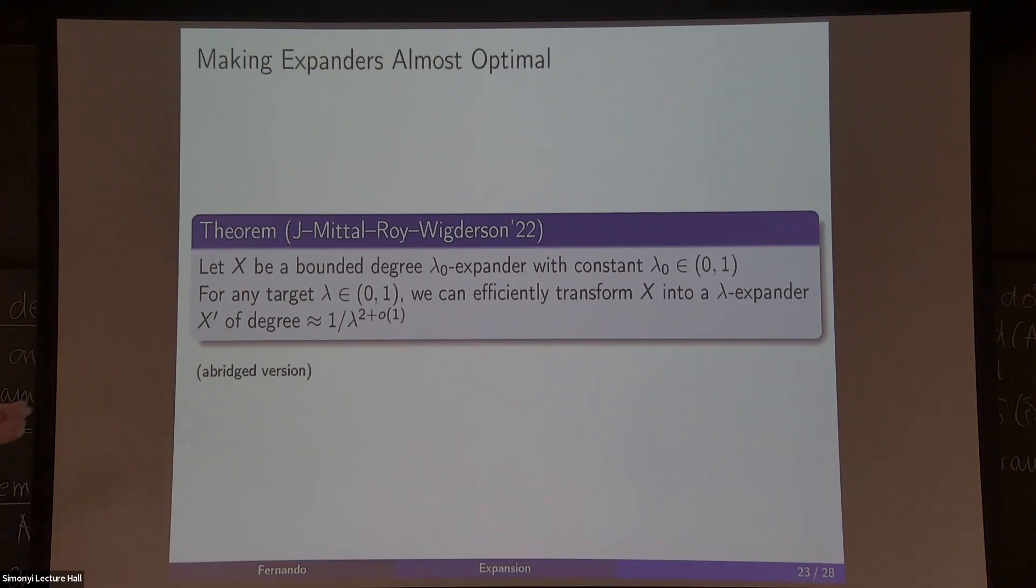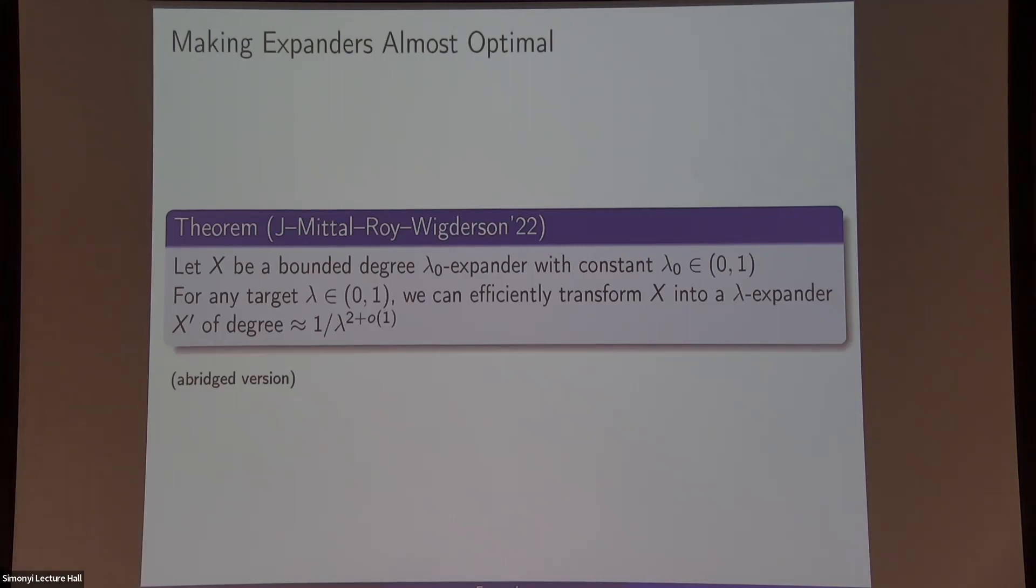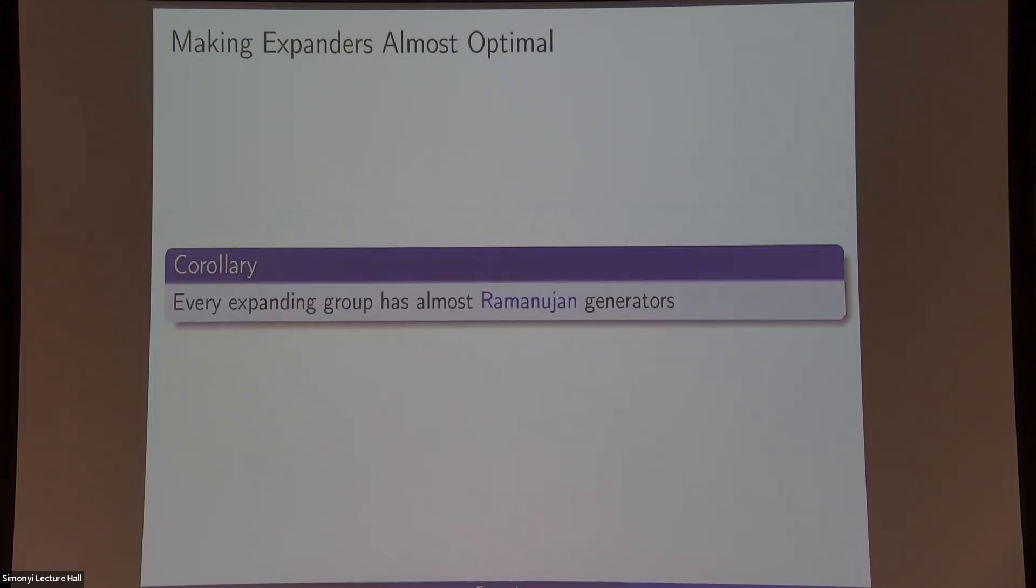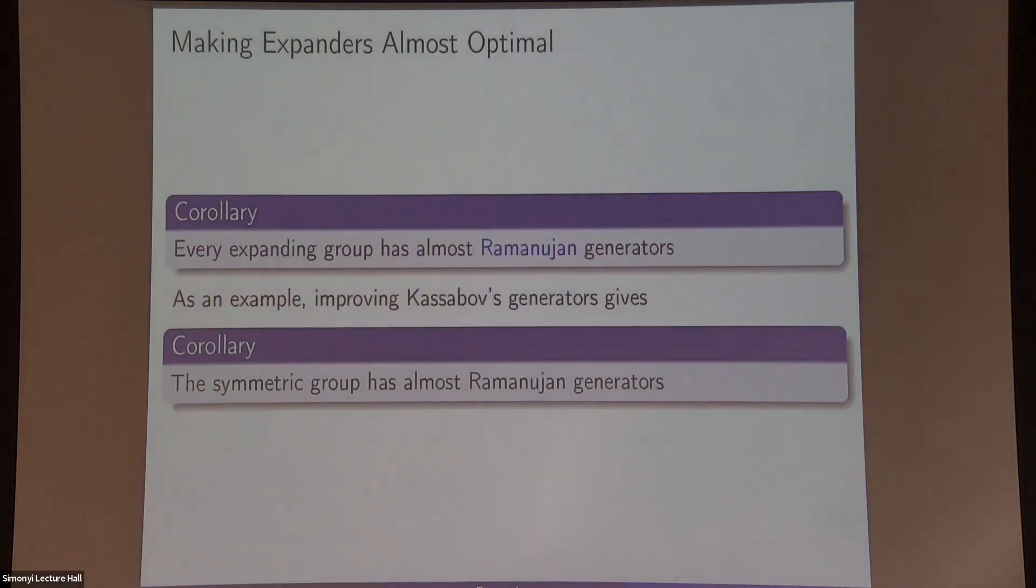That's the theorem that we prove. Besides, because we preserve the structure of the graph, whenever, for instance, if you start with a Cayley graph over some group, you end up with a Cayley graph over the same group. So whenever you have an expanding group in the sense that it has an expanding Cayley graph, you know that there's going to be almost Ramanujan generators. For instance, if you take the symmetric group, that for a long time people did not know whether it would be expanding or not, and then Kassabov around 2005 showed that okay, we do have expander generators, but we do not know, the degree is nowhere near close to the Ramanujan bound. Applying these techniques, you can show that this symmetric group has almost Ramanujan expanders. And all non-abelian finite simple groups, we also have your proof, the constructions are very constructive, very efficient. If you have something that's strongly explicit, you're going to have something that's also strongly explicit.